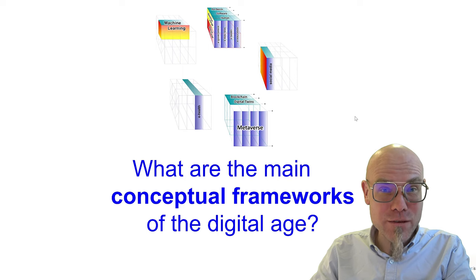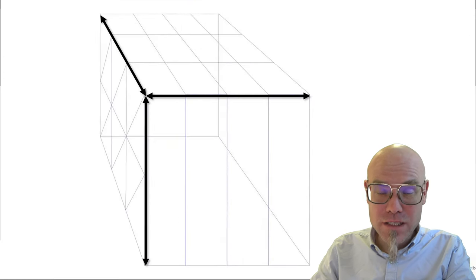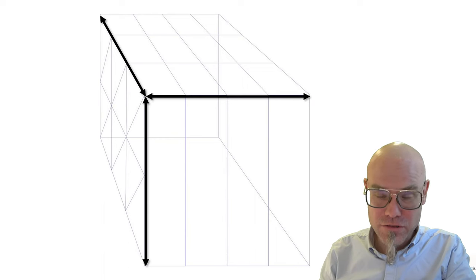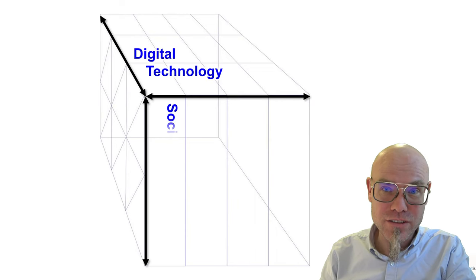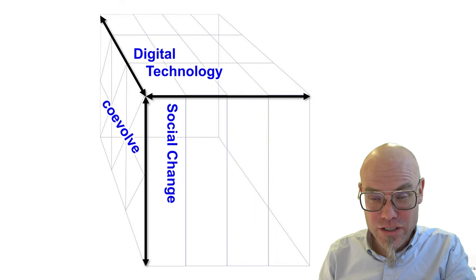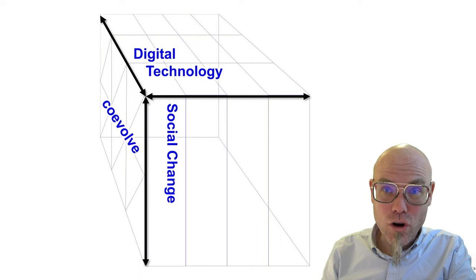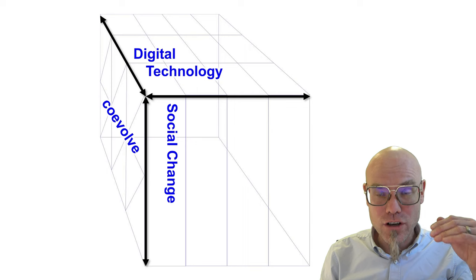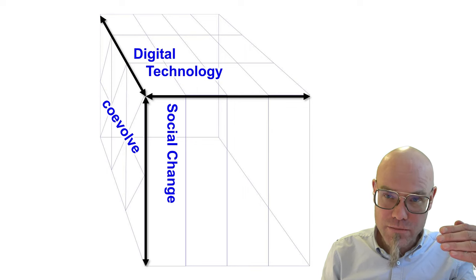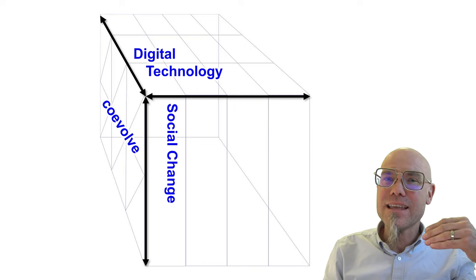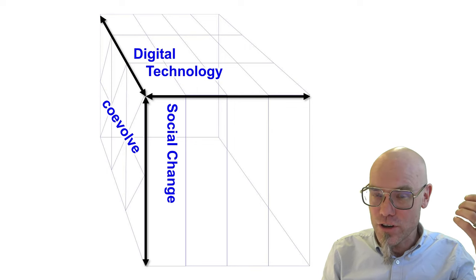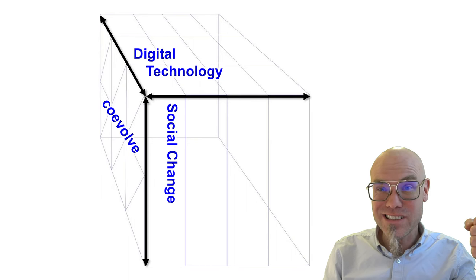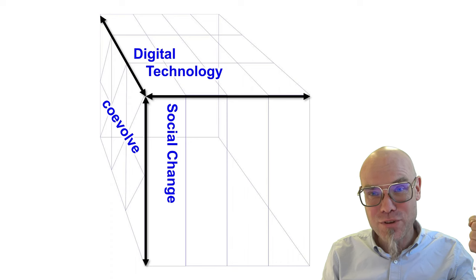The main conceptual framework of the digital age is that digital technology and social change co-evolve. This framework has three dimensions: a technological dimension, a social dimension, and then the dimension of shaping this co-evolution towards what we call human progress.